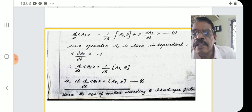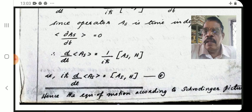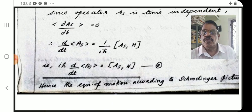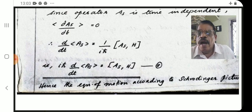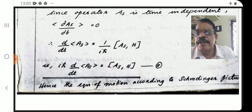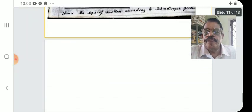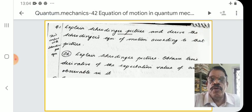This is the equation of motion according to the Schrödinger picture. The equation of motion in the Schrödinger picture is: iℏ d/dt <A> = [A, H], where H is the Hamiltonian. This is the Schrödinger equation of motion in quantum mechanics.